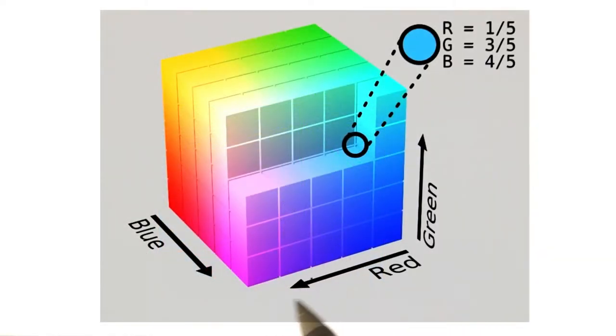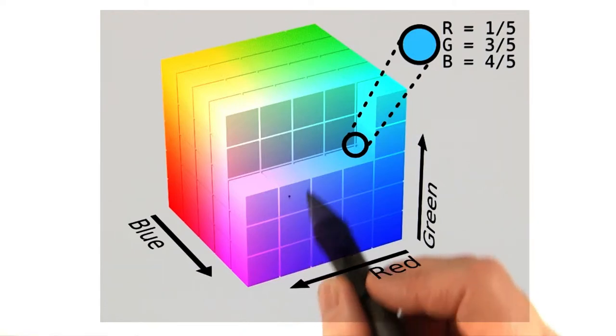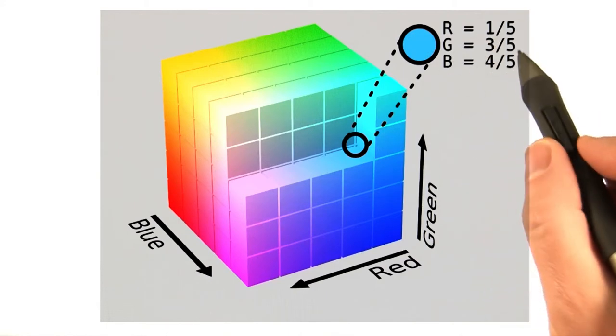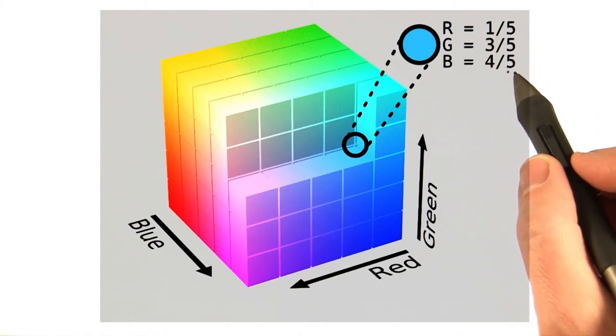Here's a view inside the cube with the red and blue axes swapped. Axis direction doesn't really matter. This point inside the cube shows how sky blue is formed by the RGB values of 1/5 red, 3/5 green, and 4/5 blue.